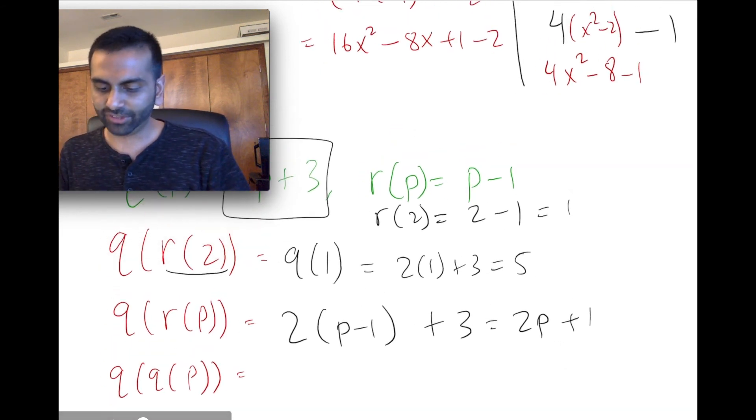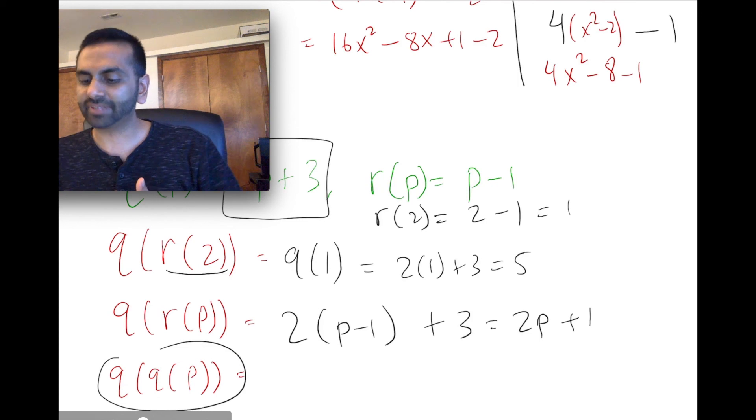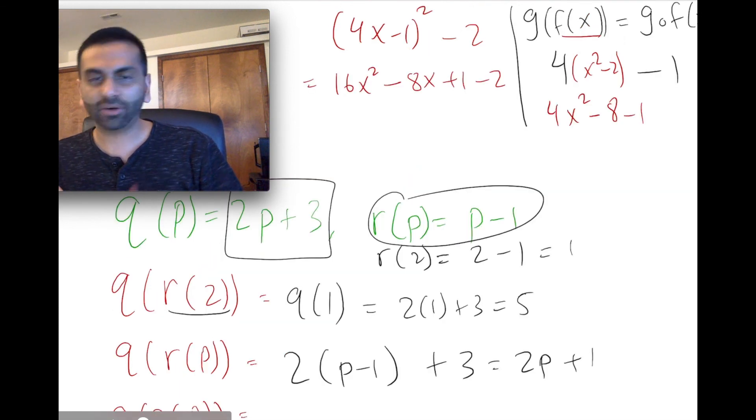Finally, what if you're asked, what's q of q of p? Here, it's almost like a trick question because you don't really need to use this r, even though you're given it.